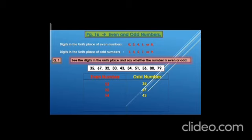Then 51: in 51, the units digit is 1, which is odd, so it will be an odd number. Now 56: in the units place we have 6, so 56 will come in the even numbers. Then 88: in the units place we have 8, so it will be an even number. And the last one is 79: in the units place we have 9, so it is an odd number. Children, this full page we have to write in your math notebook.